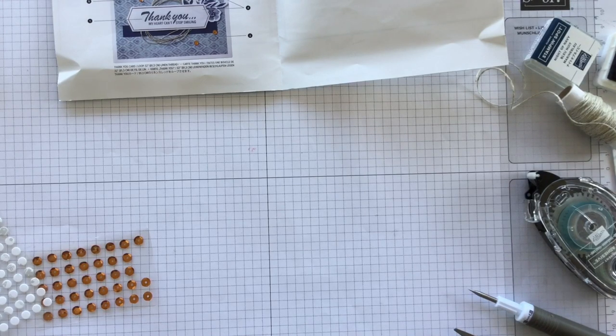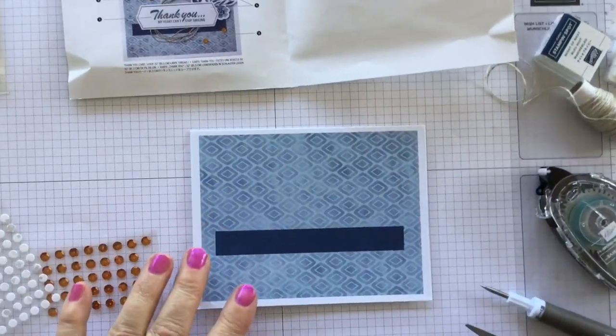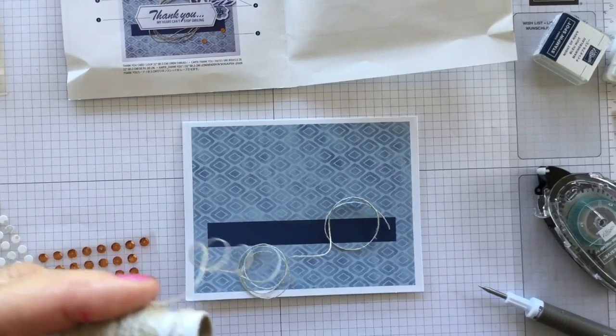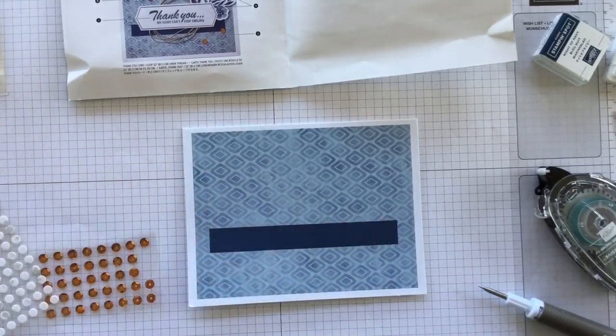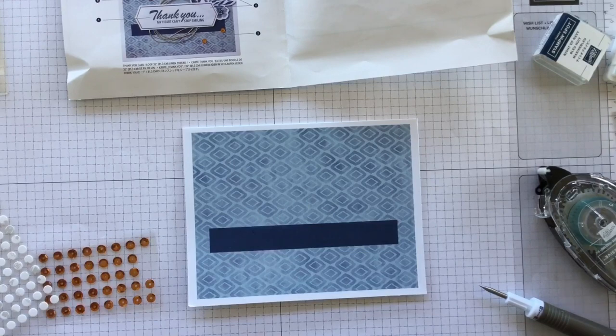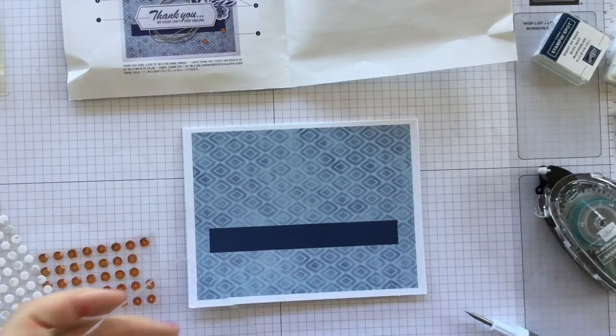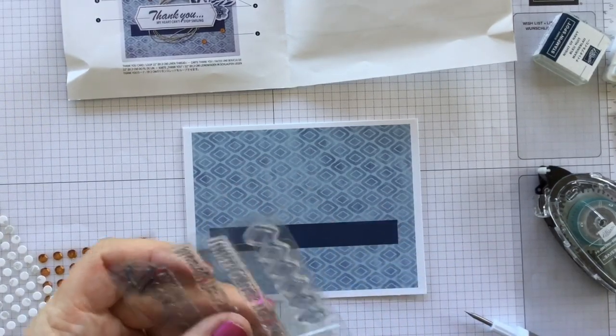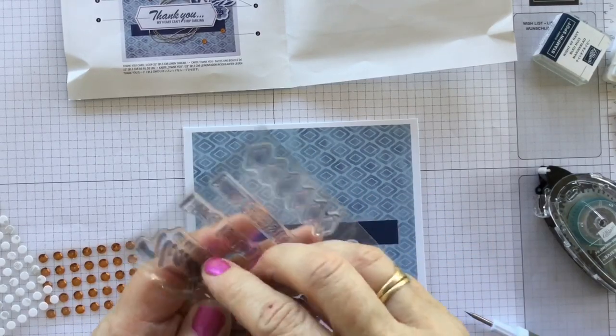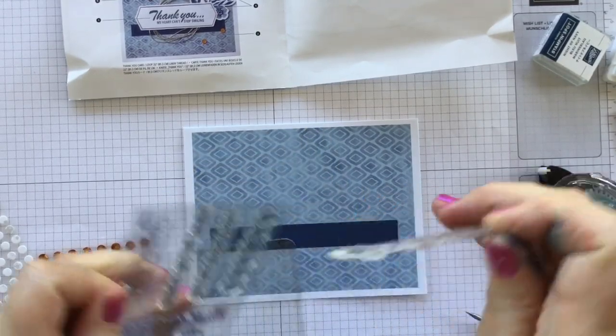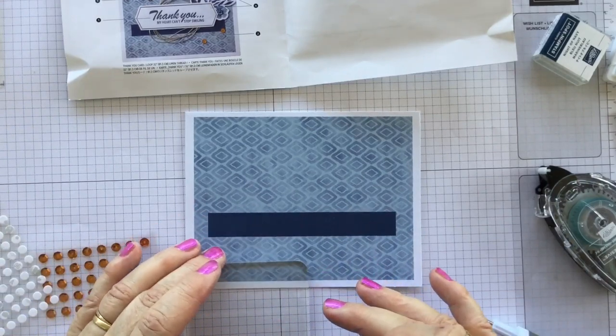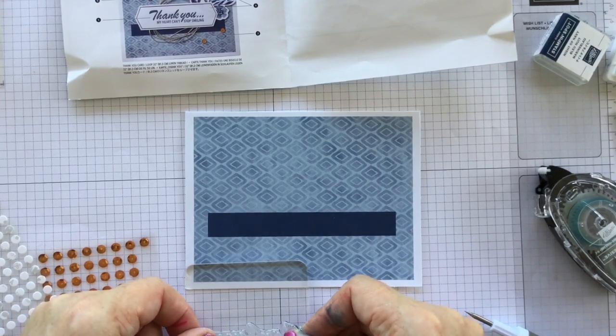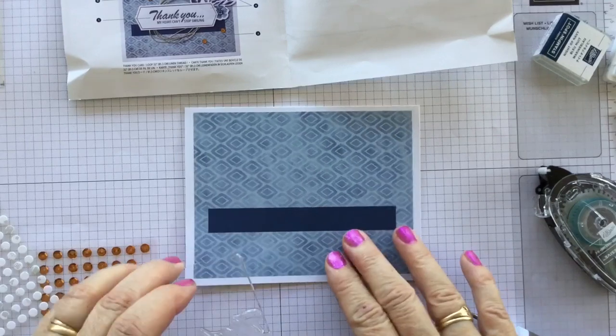Card number two is this one here. Sorry I bumped my camera. So now it looks like we need a whole heap of linen again so I'll just cut off a piece of that. Pop that off to the side. The stamp that we're using this time is thank you my heart can't stop smiling. So we will pop our other one back. And get this one out here. Line it up on our grid.